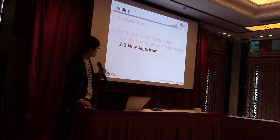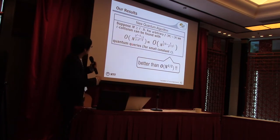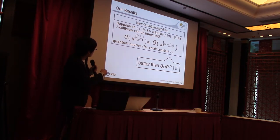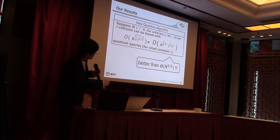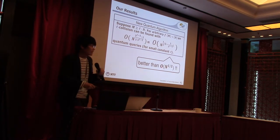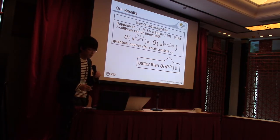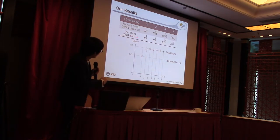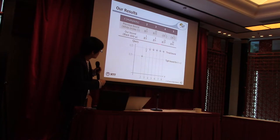I now present our main result. We propose a quantum algorithm to find multiple collisions. Suppose m ≥ L·n. Then for arbitrary f, an L-collision can be found with a new complexity. This bound is better than the trivial bound, so our quantum algorithm is a non-trivial quantum algorithm to find multiple collisions. This graph shows the results: if L=2, our bound matches the previous bound; if L=3, our bound improves the previous bound; and if L ≥ 4, our bound is non-trivial where previous approaches failed.